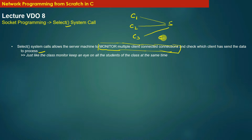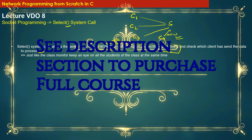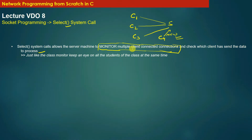Suppose there is a client C4 which is not connected to server S but sends a new connection initiation request. Using select system call, server S can not only monitor the existing connected clients but also monitor new connection initiation requests from new clients. Just like a class monitor keeps an eye on all students at the same time, the server keeps an eye on all file descriptors of connected clients as well as the arrival of new connection requests, and can take action appropriately.